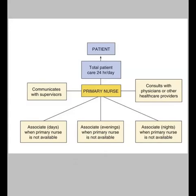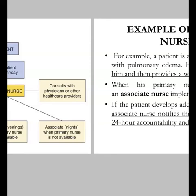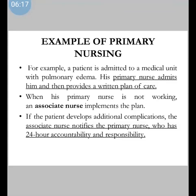An example of primary nursing: a patient is admitted to a medical unit with pulmonary edema. The primary nurse admits him and provides a written plan of care. When the primary nurse is not working, the associate nurse implements the plan. If the patient develops additional complications, the associate nurse notifies the primary nurse, who has 24-hour accountability and responsibility for patient care even when off duty.